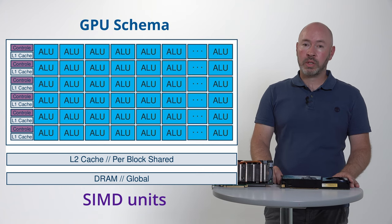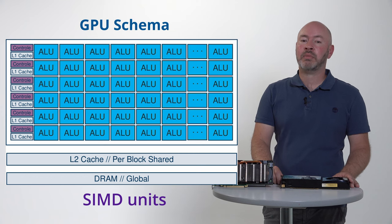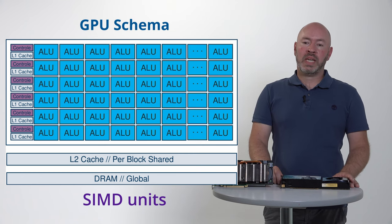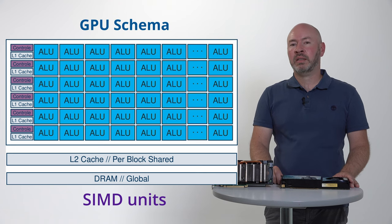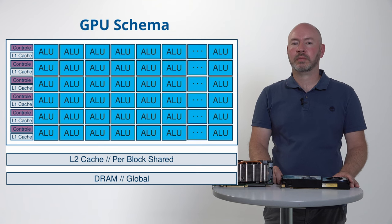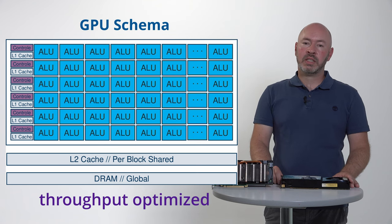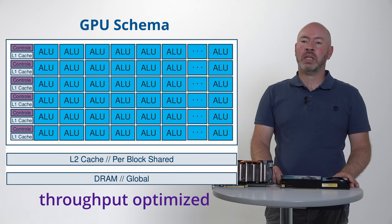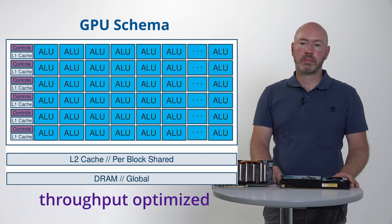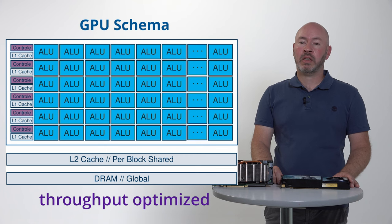Due to the reduced instruction set, they are somewhat limited in usage, but the total amount of ALUs outperforms a typical CPU by far and delivers a vast amount of flops. In addition, there is an L2 cache and an off-chip DRAM, which is typically a high bandwidth memory. The memory hierarchy of the GPU is thus throughput optimized.